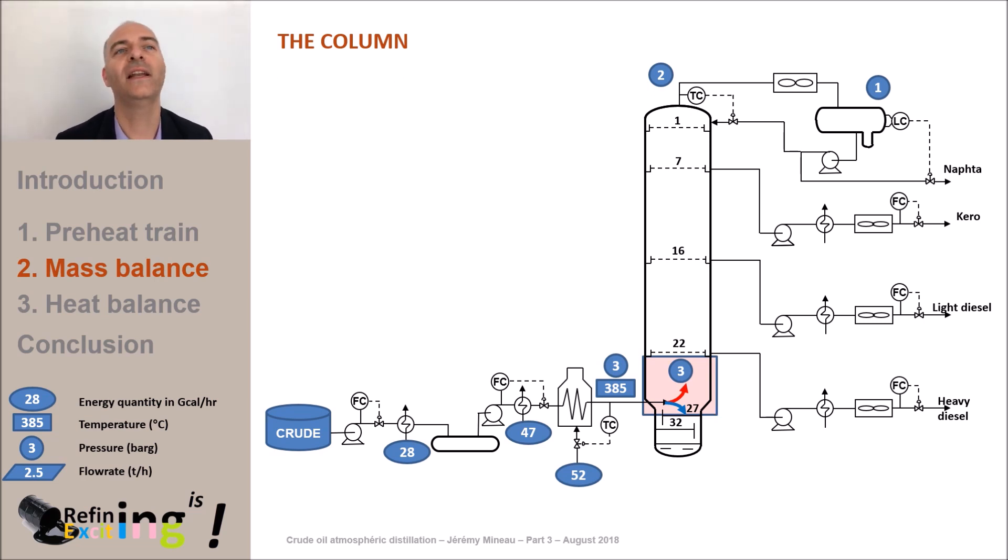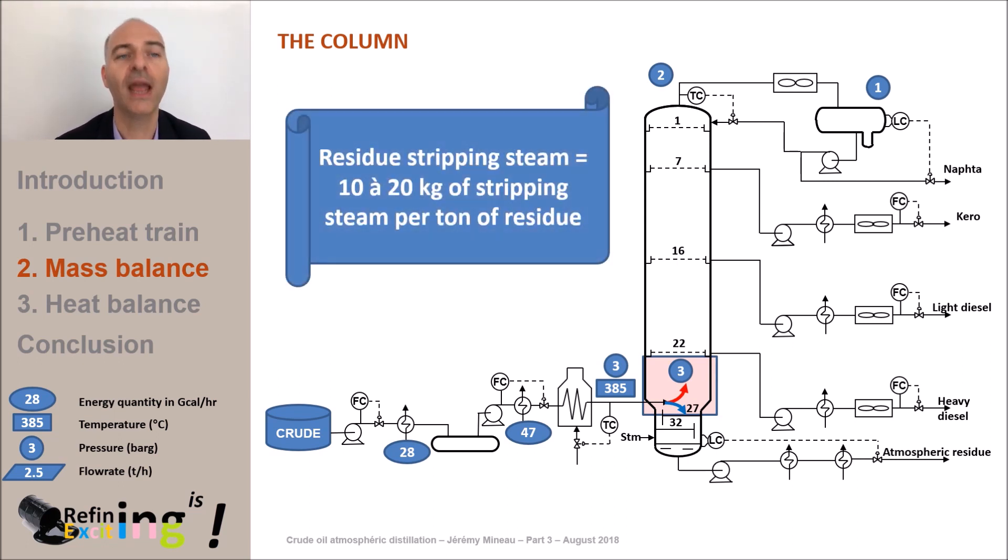Unlike a conventional distillation column, atmospheric distillation is not equipped with a reboiler. The upward vapor phase in the bottom of the column is ensured by stripping steam which is injected at the bottom of the column. The purpose of this stripping steam is to ensure an ascending gas flow and to strip the heavy diesel molecules that would remain in the bottom liquid. Typically, we will inject about 10 to 20 kg of steam per ton of atmospheric residue. In our case, this corresponds to a quantity of stripping steam of about 2.5 tons per hour.